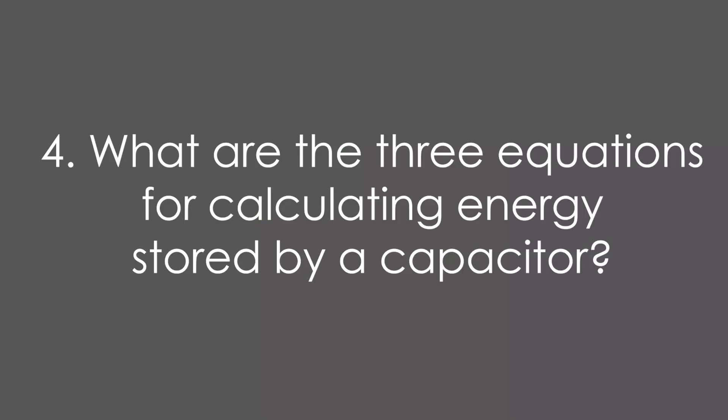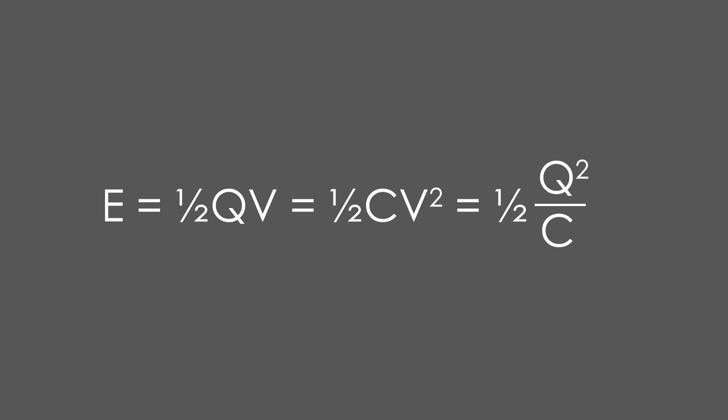Four, what are the three equations for calculating energy stored by a capacitor? Just like area under the graph, energy equals half QV. Substituting Q equals VC we also get half CV squared or half Q squared over C.